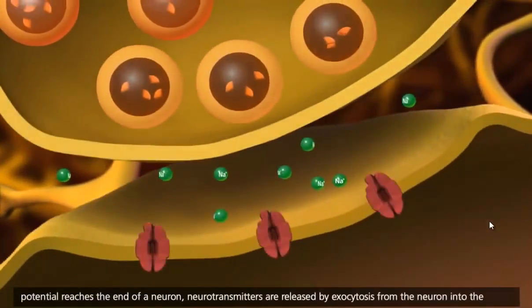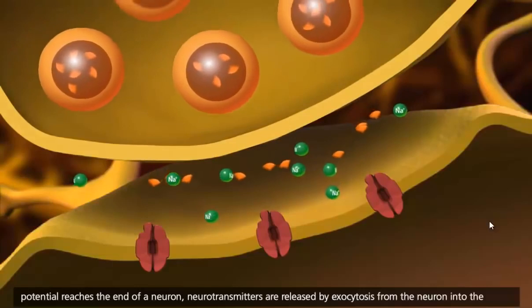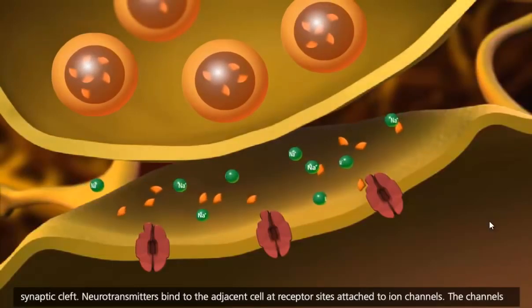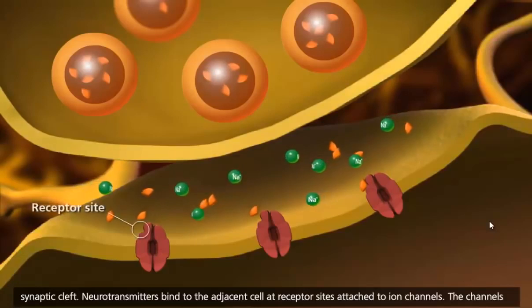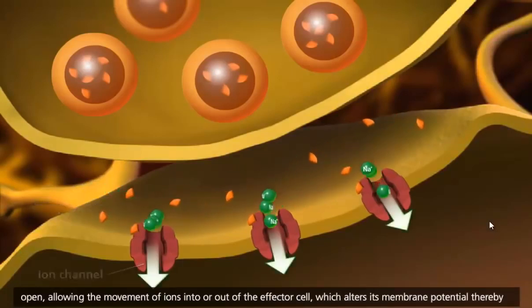When an action potential reaches the end of a neuron, neurotransmitters are released by exocytosis from the neuron into the synaptic cleft. Neurotransmitters bind to the adjacent cell at receptor sites attached to ion channels.